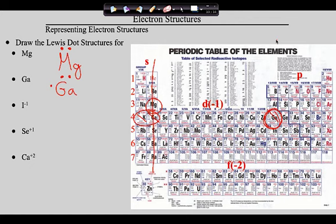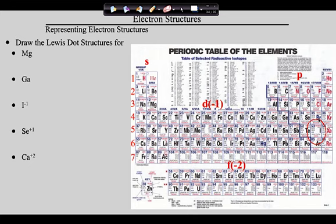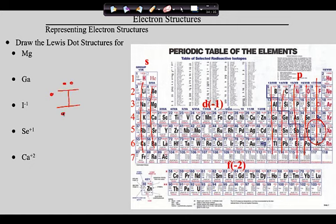Now iodine, element 53. Counting over to its group: one, two, three, four, five, six, seven — iodine has seven valence electrons. Write the abbreviation I. Electrons one and two pair up, then three, four, and five go unpaired, then six and seven pair up. Now we account for the minus one charge — to give it a negative charge we add one electron. That would be the Lewis dot diagram for iodine with a minus one charge.